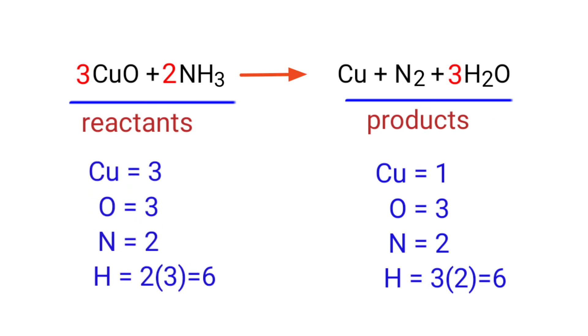The Oxide atoms are now balanced, but the Copper atoms are unbalanced. To balance that, we need to put a coefficient of 3 in front of CuO.